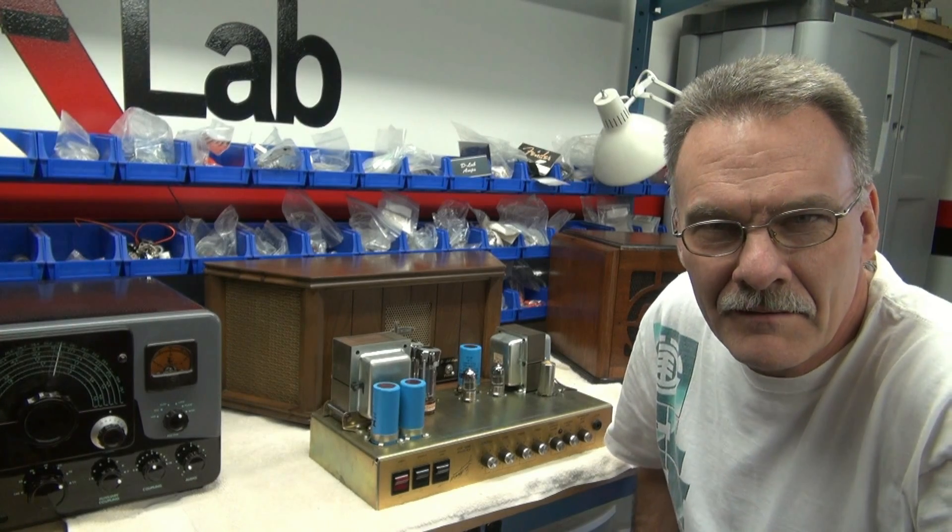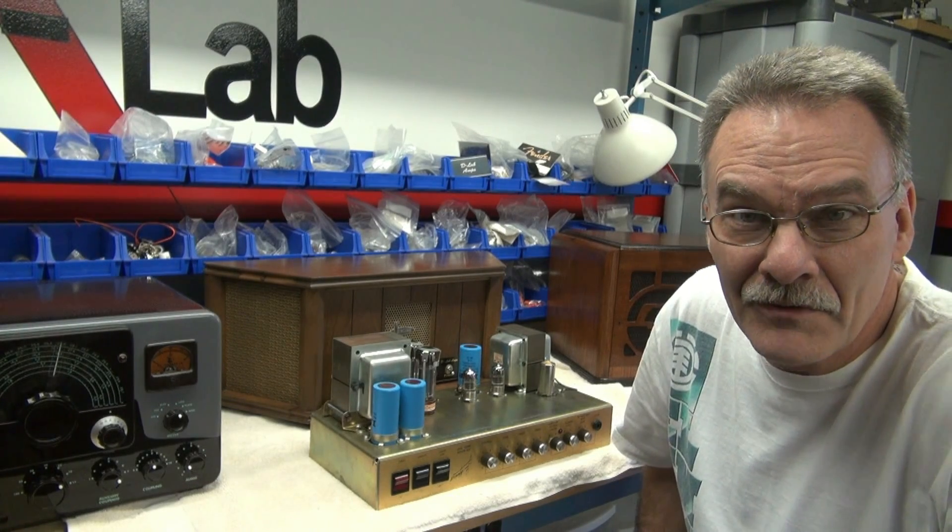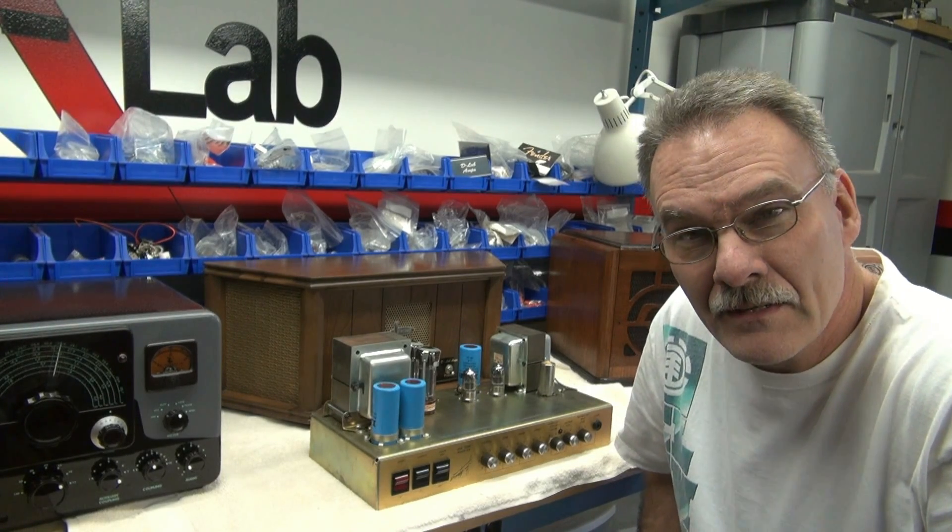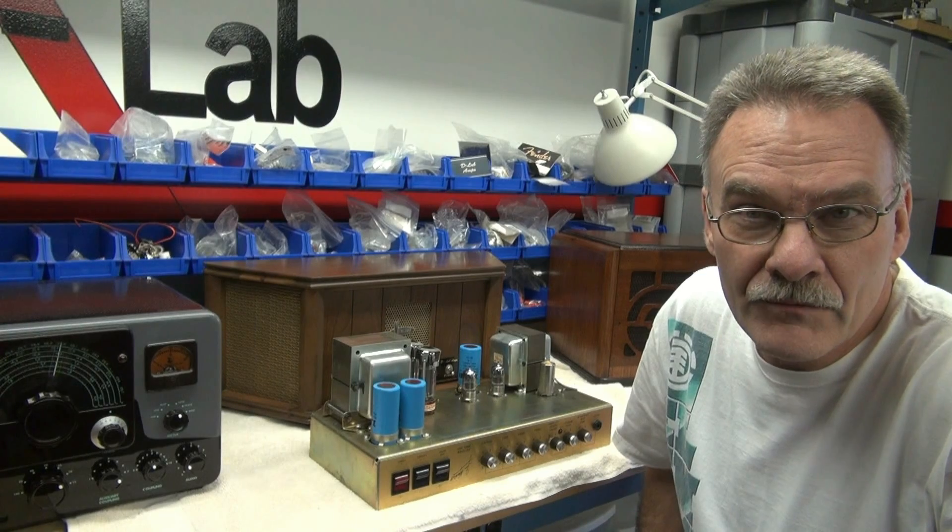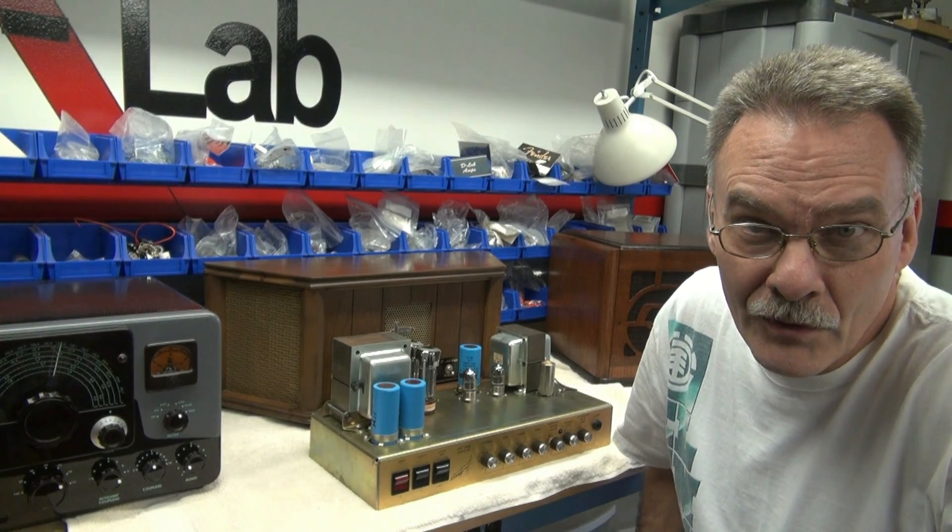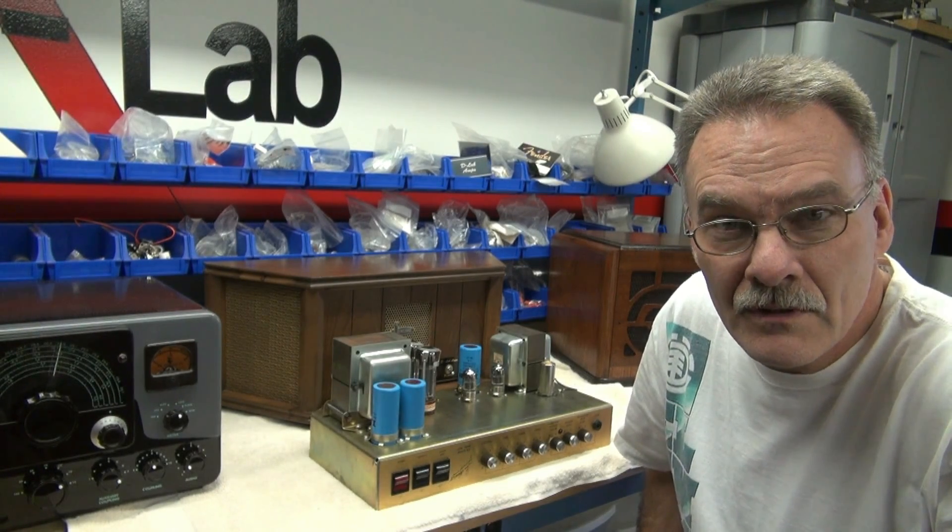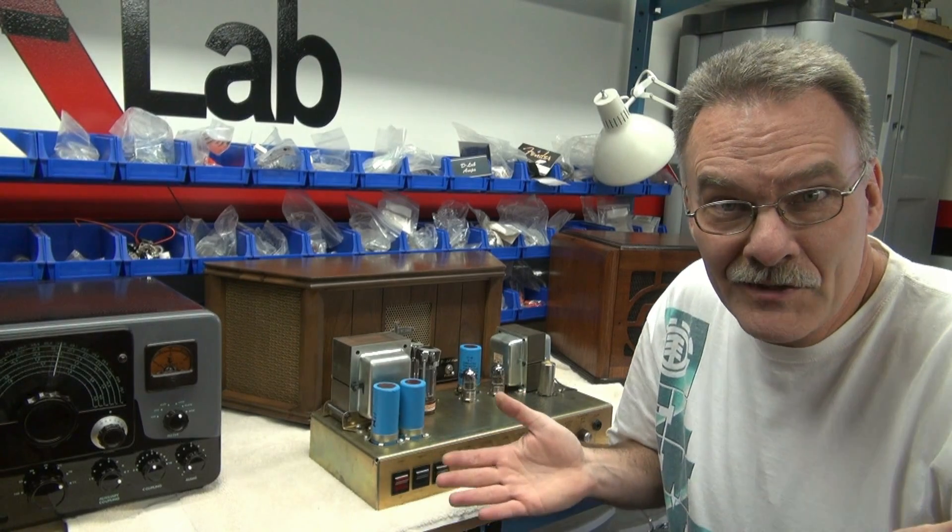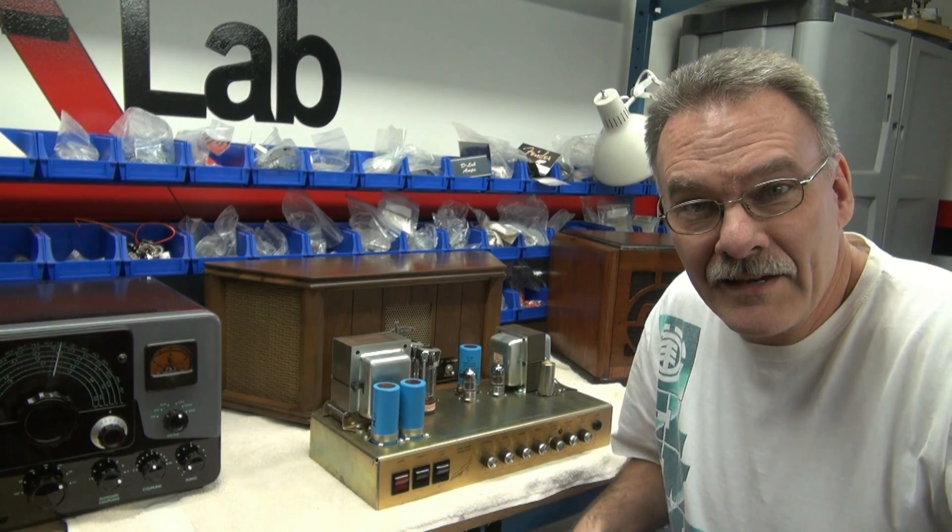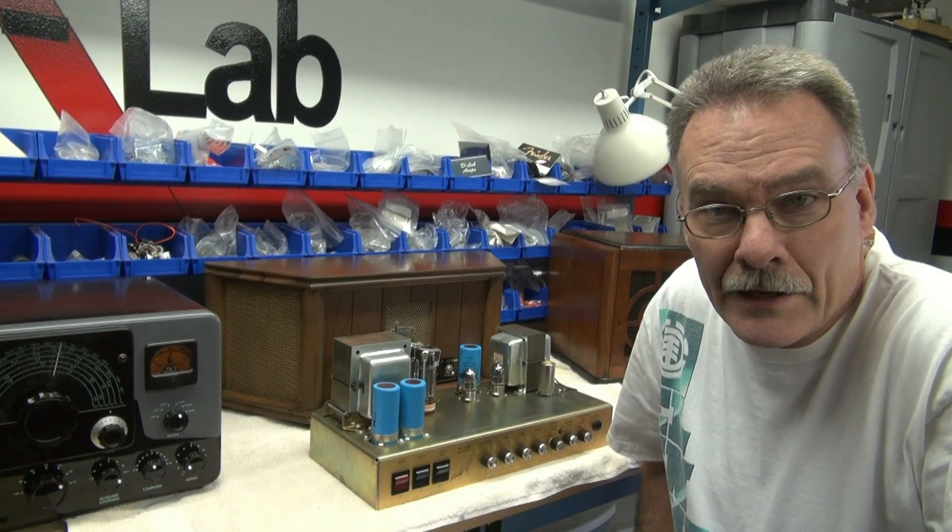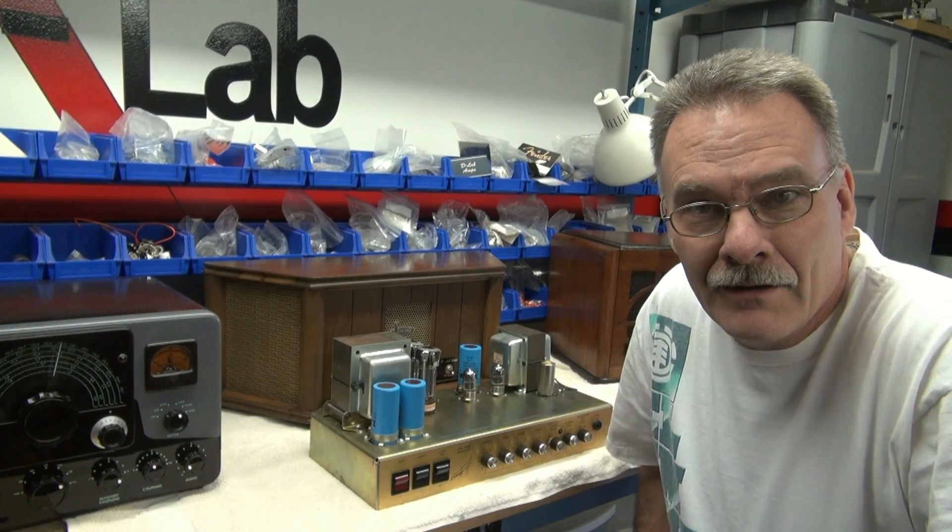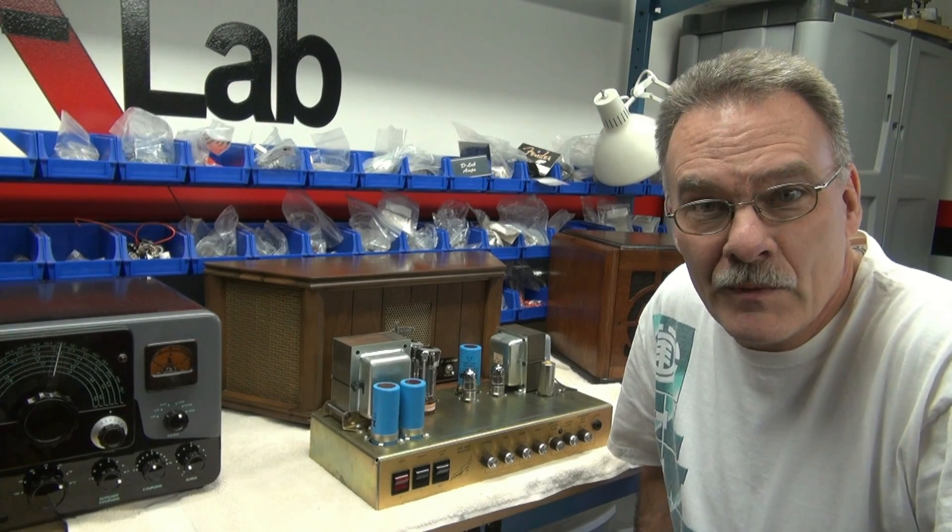Hey everybody, Terry back with you at D-Lab with another biasing issue. This time I'm working on a JCM50, Marshall of course, just installed a pair of EL34 output tubes, went to adjust the bias, there's no test points. You get online, you look it up, everybody's like take it to a tech. I was like, no, there should be an easy way to do this.